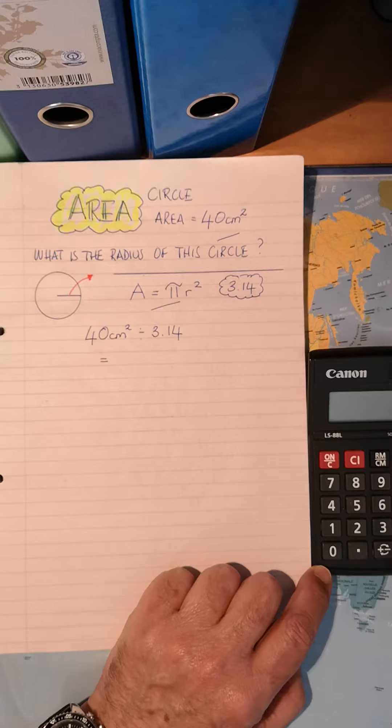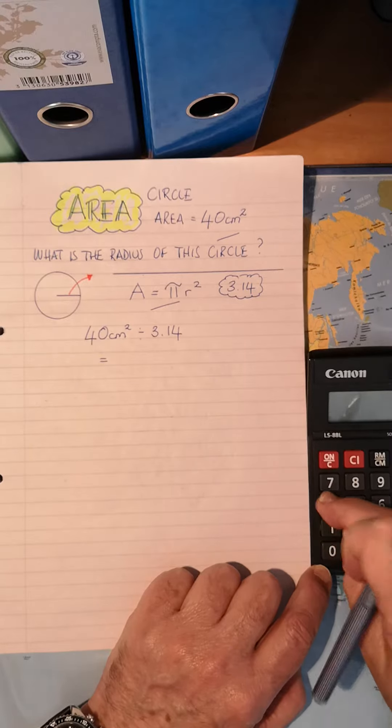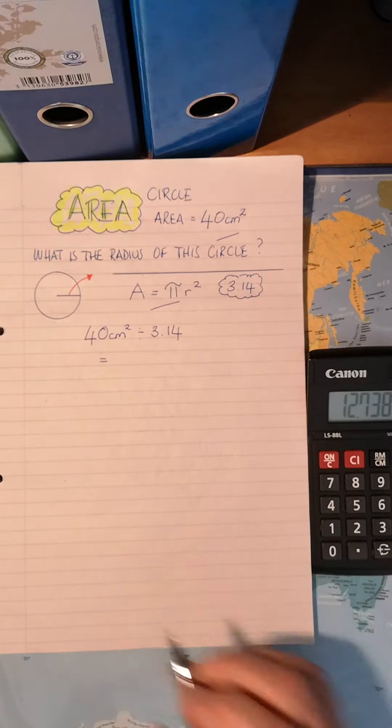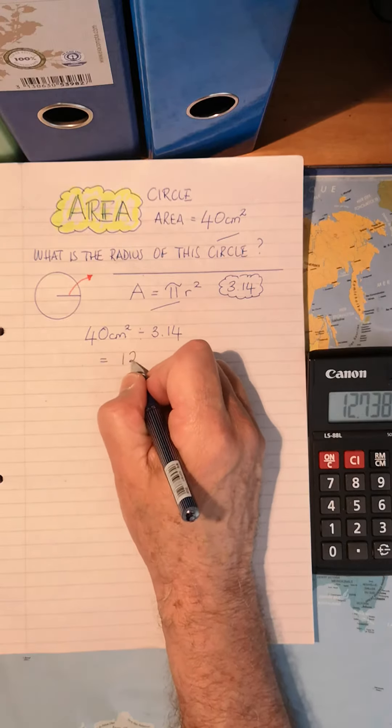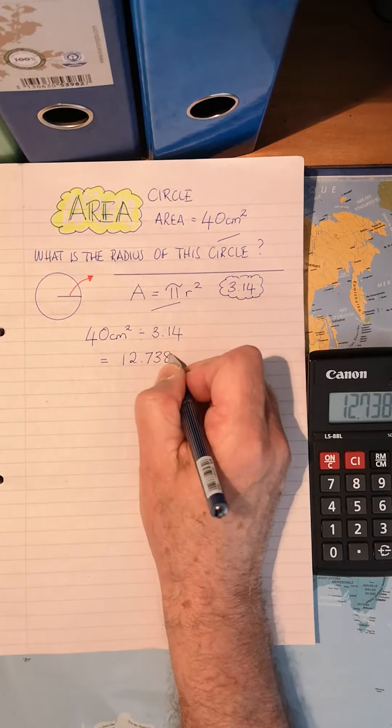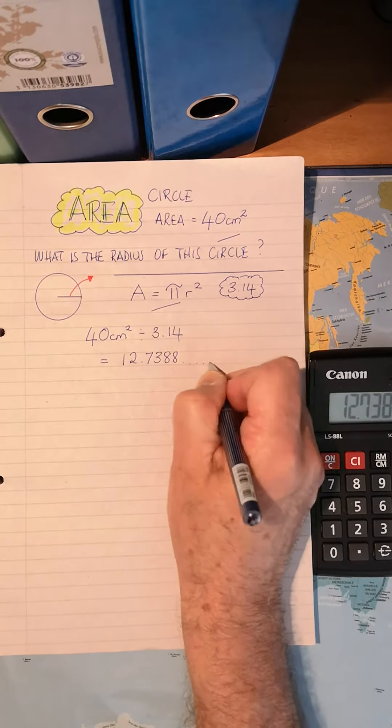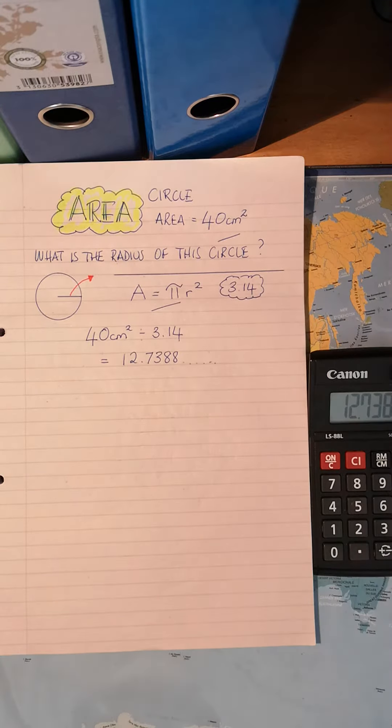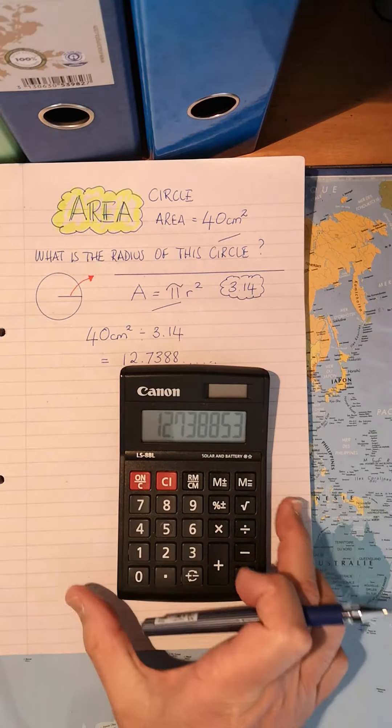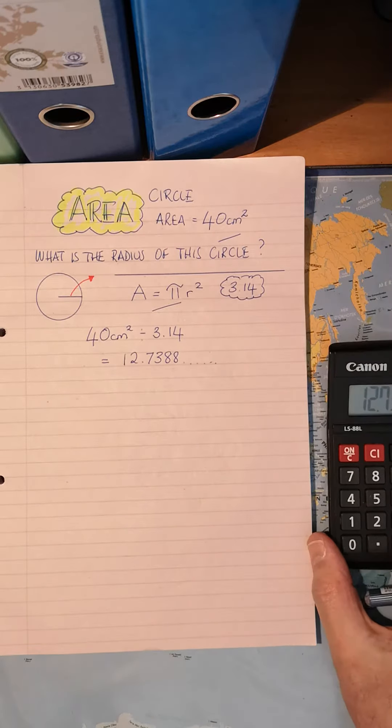40 divided by 3.14 is equal to, and I'm going to write down this number, 12.7388, and we don't need any more digits. But do not delete that. Leave that there, because there's still another step.